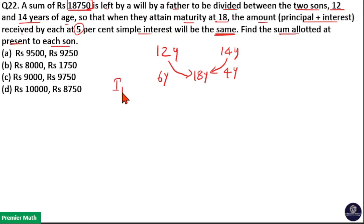Now, interest received by the first son is equal to, here 5 percentage is the rate for both the sons. So, interest received is equal to 6 into 5, 30 percentage and interest received by the second son is equal to 4 into 5, 20 percentage.